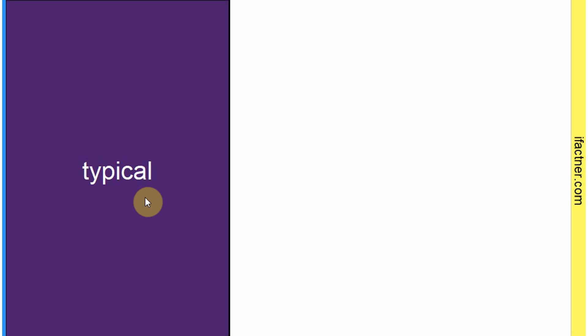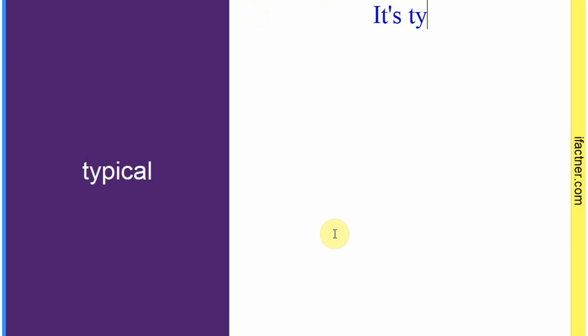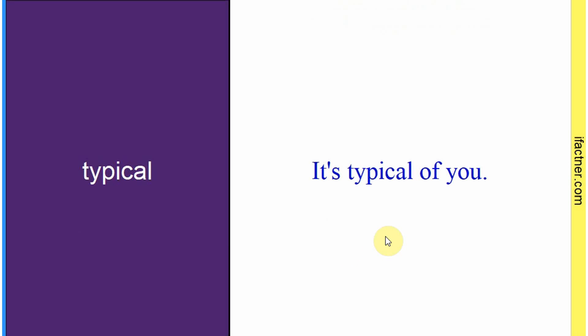Word hai: 'typical'. Sentence banaate hain: 'It's typical of you.' Agar koi gussa kar raha hai, toh aap keh sakte hain 'It's typical of you' — ki yeh bilkul tum apne hi jaise ho. Toh 'typical' hota hai ki koi khas cheez ho jo kisi se hum mansub kar sakay. Sentence banaaya: 'It's typical of you.'